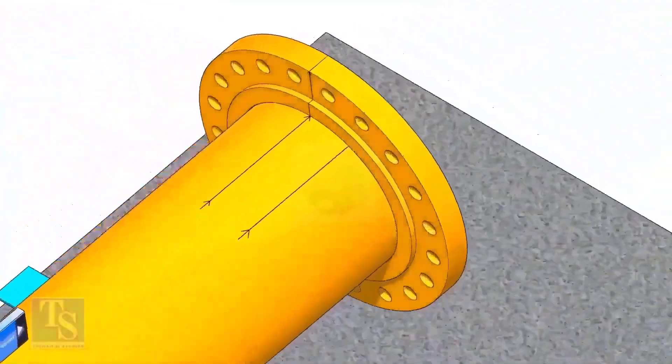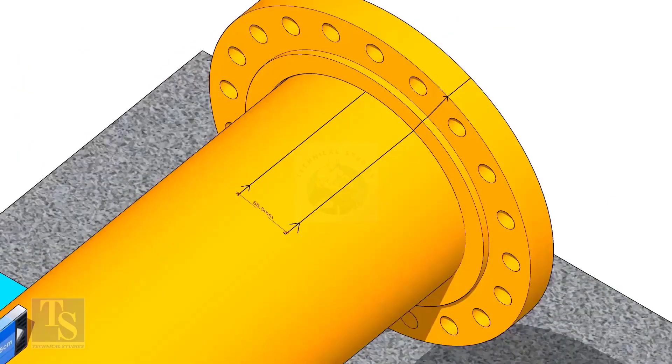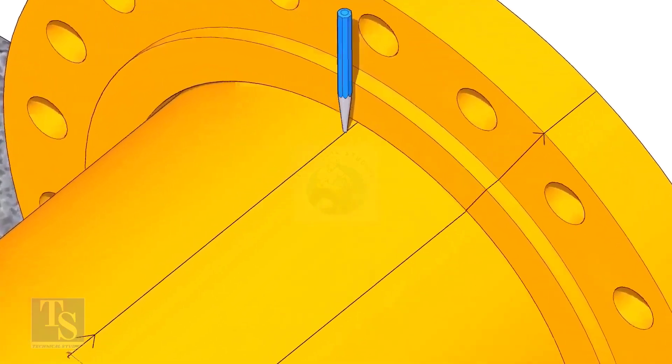Put the flange on the pipe. Rotate the flange until the center line on the flange and the 25 degree line on the pipe comes in a line. Don't forget to punch mark the center lines.